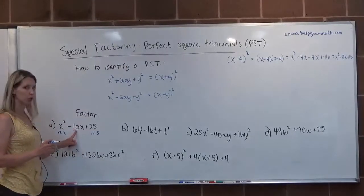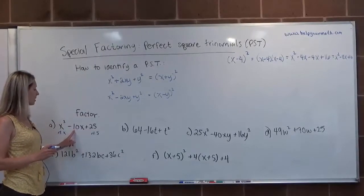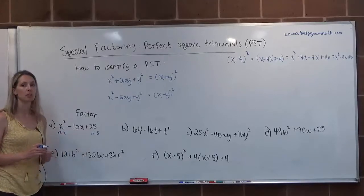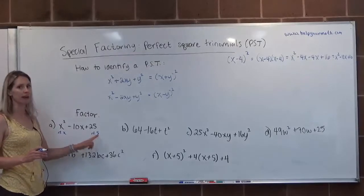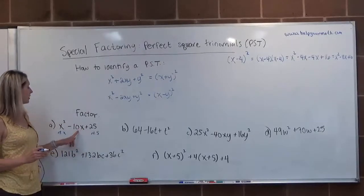Now we have to check the middle term. Is the middle term, if we take the two roots and multiply them and double it, does that give us the middle term? So x times 5 is 5x, doubled is 10x. We do have 10x.